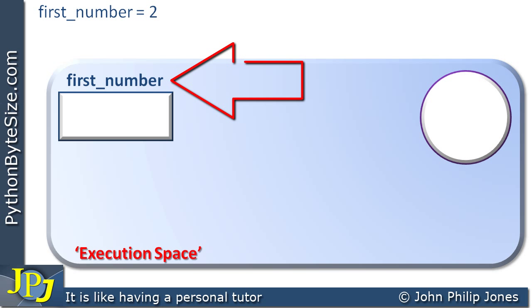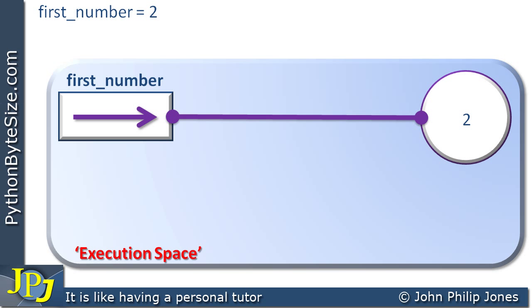The object reference is given the name first_number and the 2 will be copied to the object. The object reference first_number will receive the location of the object in the execution space, and we say that these are now bound together. Next we're going to look at this program statement: number_copy is assigned first_number.